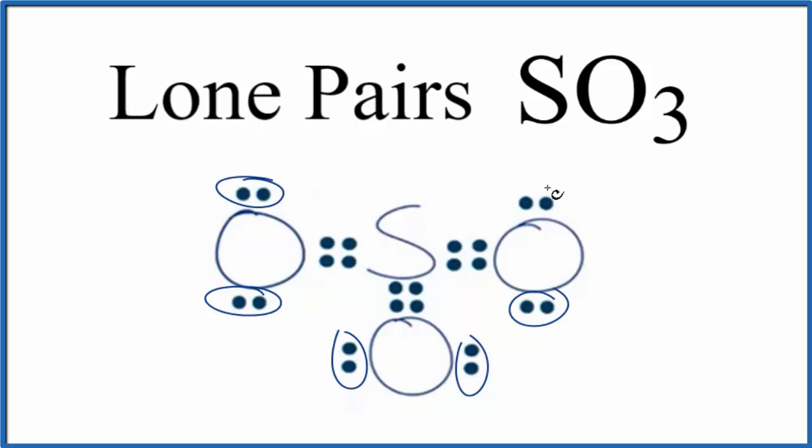They're not between atoms, so these are the lone pairs for SO3. We have one, two, three, four, five, six lone pairs total. But on the central sulfur we don't have any.